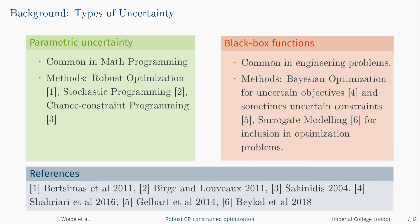These black box functions can be addressed using other techniques. One is Bayesian optimization, which largely looks at black box objectives but has also been extended to black box constraints. Another one is the use of surrogate models to represent black box functions in mathematical programs. In this work, we are interested in applying techniques for optimization under uncertainty to optimization problems with uncertain black box constraints.